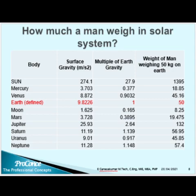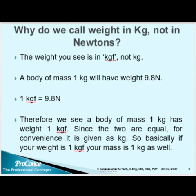I would like to clarify something here. Earlier I said the unit of weight is Newtons, but now I am talking about a man's weight of 50 kg. Why do we call weight in kg and not in Newtons generally? The weight shown here is in kilogram-force, not in kg. A body of mass 1 kg will have a weight of 9.8 N, and 1 kg-force is equal to 9.8 N. Therefore, a body of mass 1 kg has a weight of 1 kg-force. Since the two are equal, for convenience it is given as kilogram. So basically, if your weight is 1 kg-force, your mass is 1 kg as well.